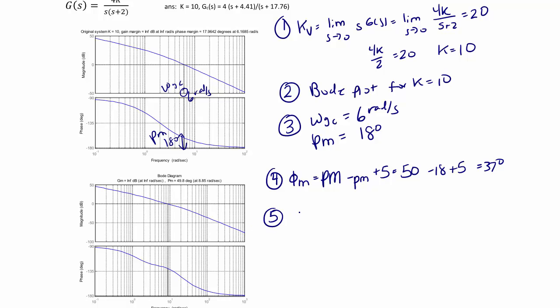Step 5 is to find the attenuation factor. The attenuation factor alpha is equal to 1 minus sine of phi over 1 plus sine of phi, and we get that alpha is approximately 0.25.